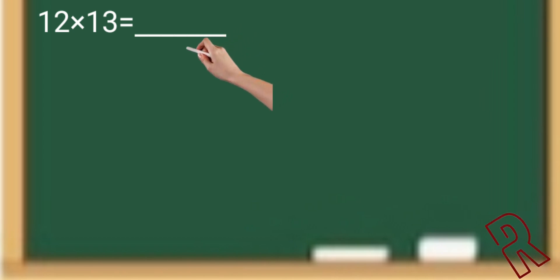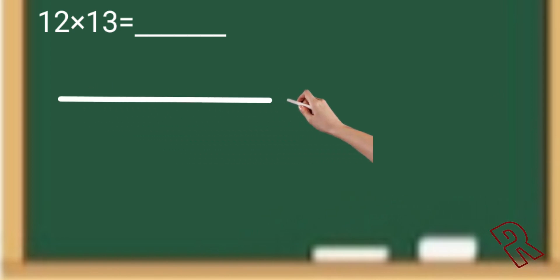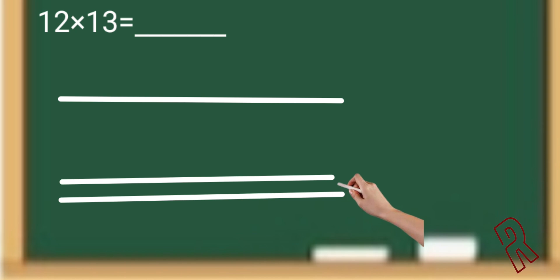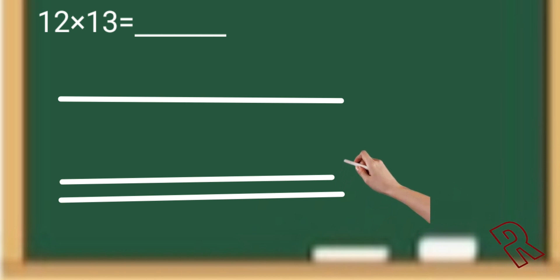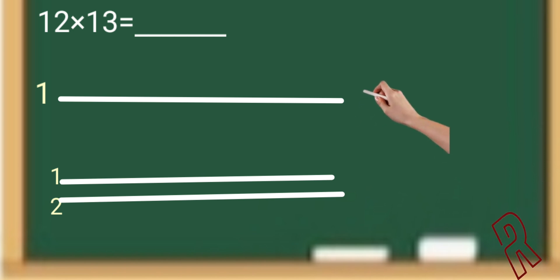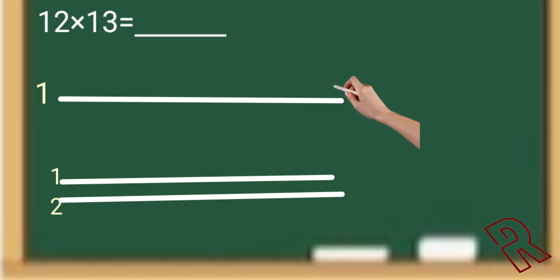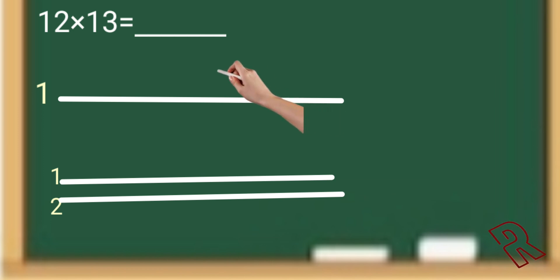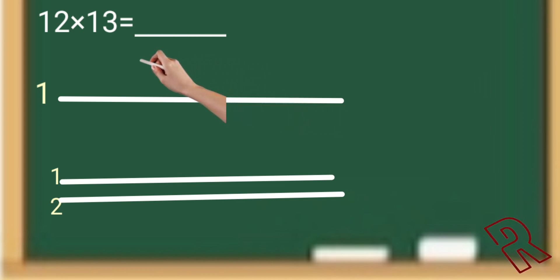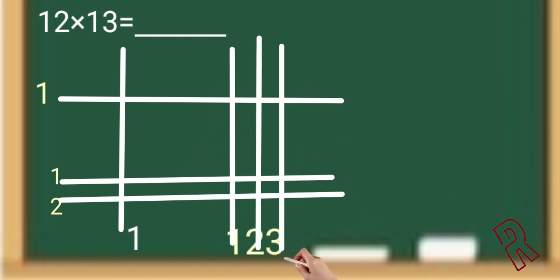We do the same thing for two-digit numbers — the only difference I'll show you now. For 12 × 13: take the number 12 and first draw one horizontal line for the digit 1, leave some gap, then draw two horizontal lines for the digit 2. Horizontal lines are done for the first number. The key difference is we leave a gap between the two digits. Next, draw vertical lines for 13: one vertical line for the digit 1, and three vertical lines for the digit 3.